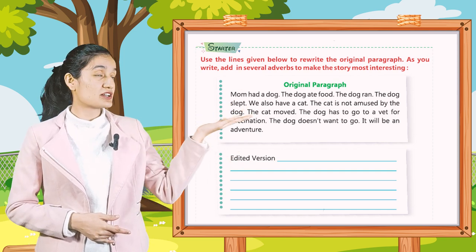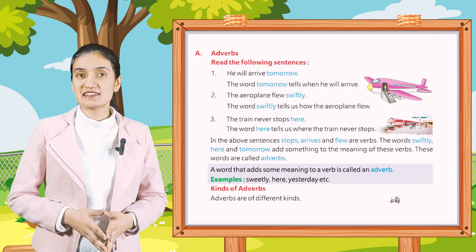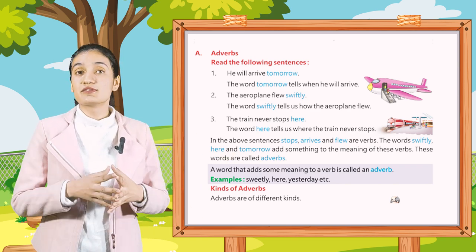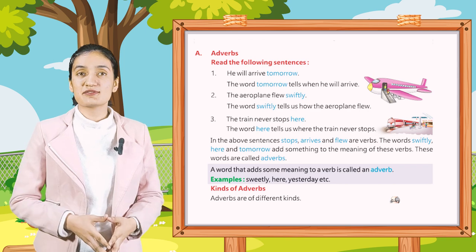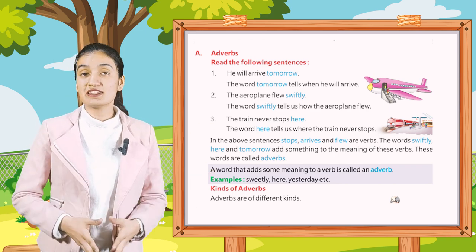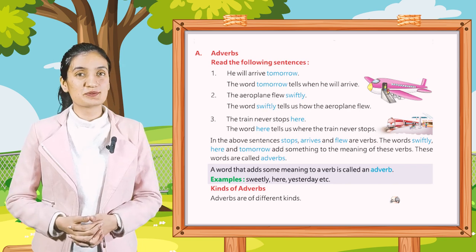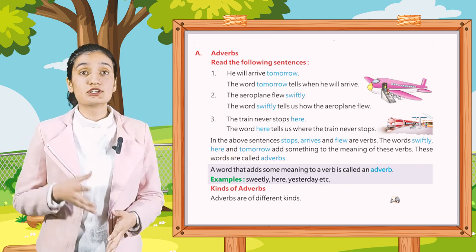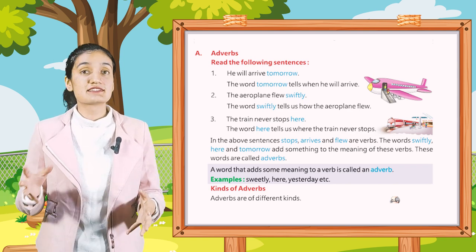Read the following sentences. First: He will arrive tomorrow — the word 'tomorrow' tells when he will arrive. Second: The aeroplane flew swiftly — the word 'swiftly' tells us how the airplane flew. Third: The train never stops here — the word 'here' tells us where the train never stops.